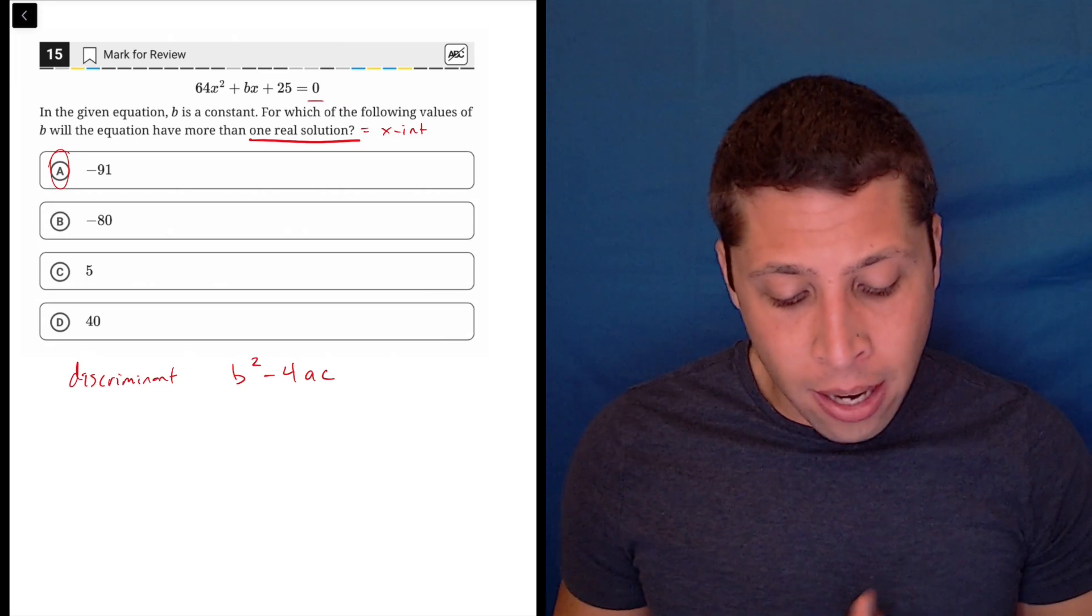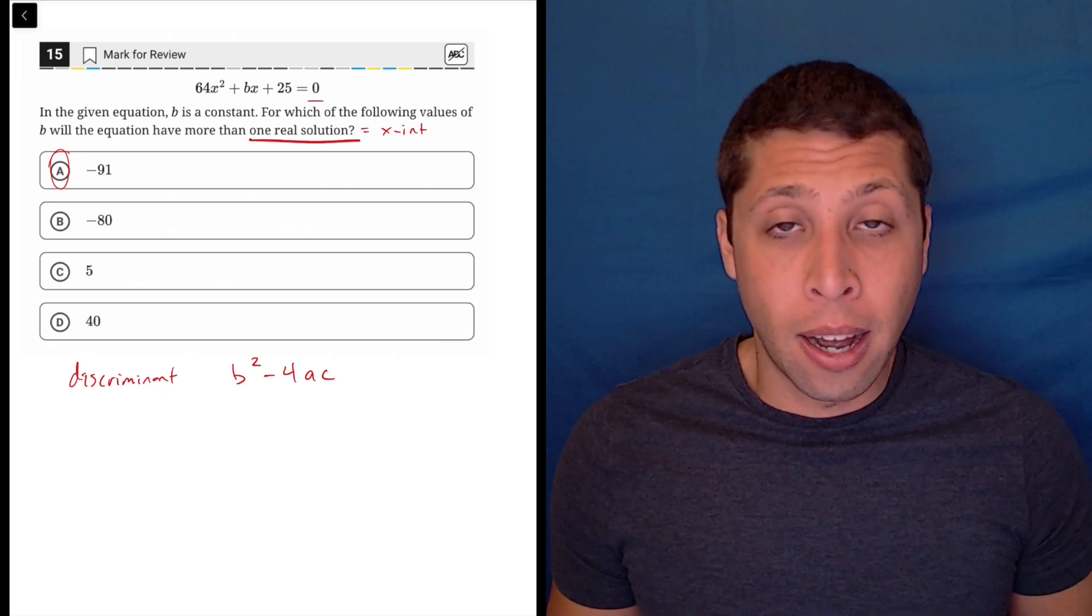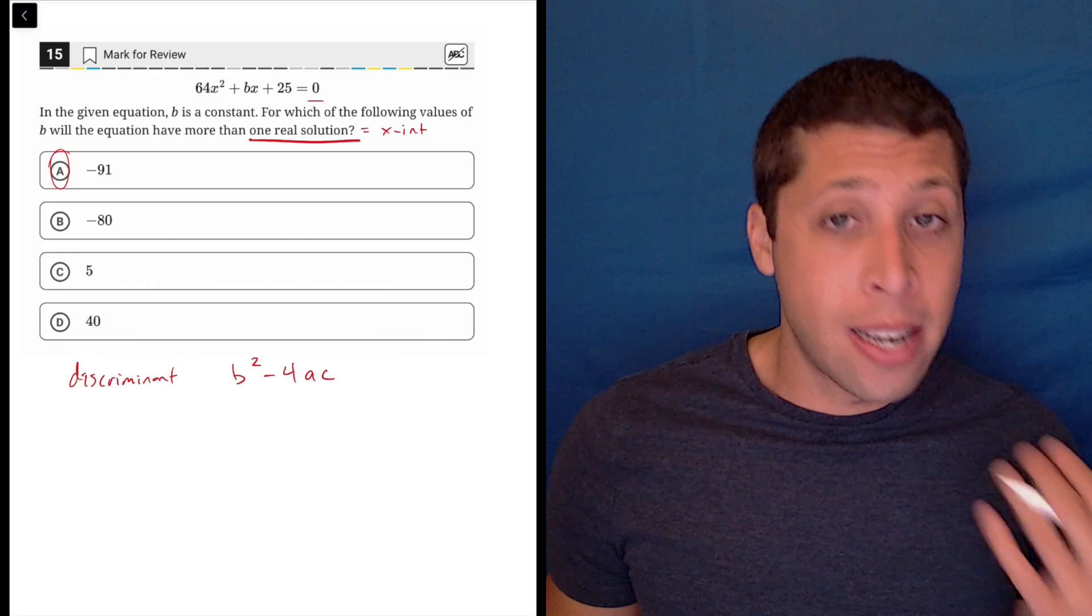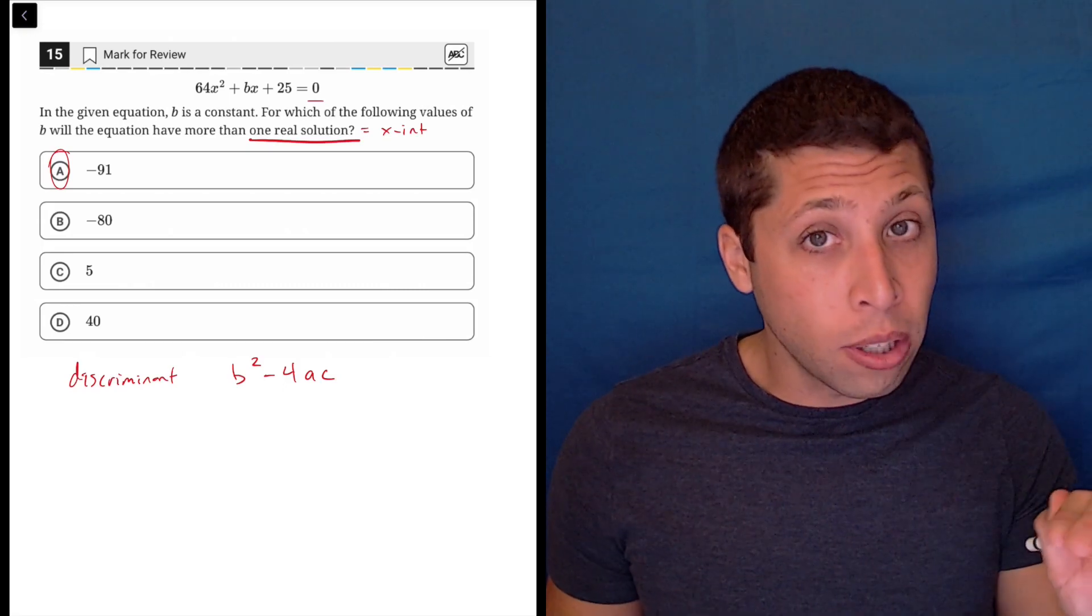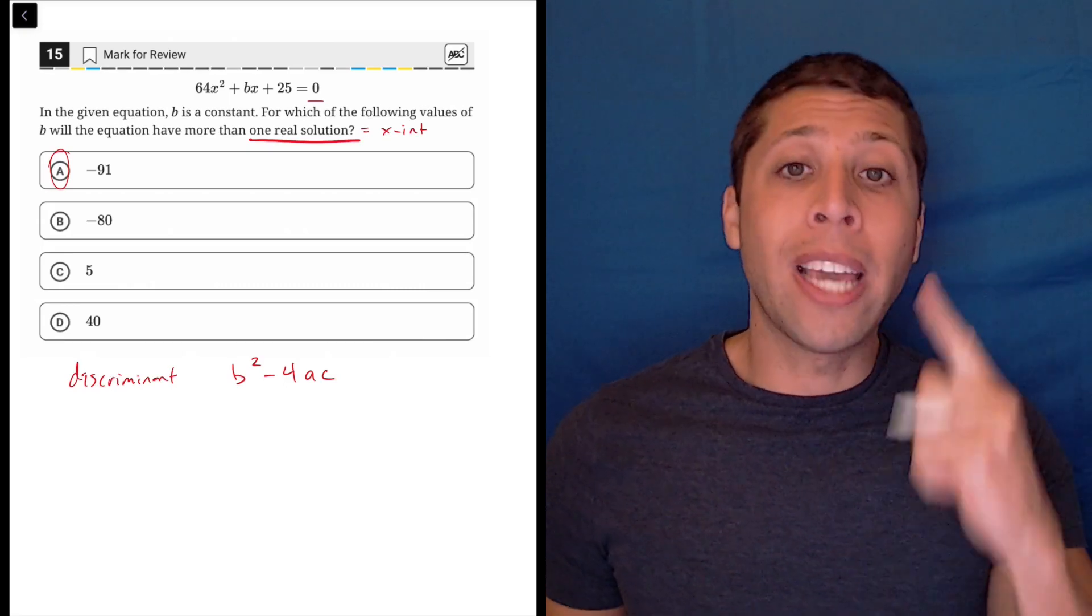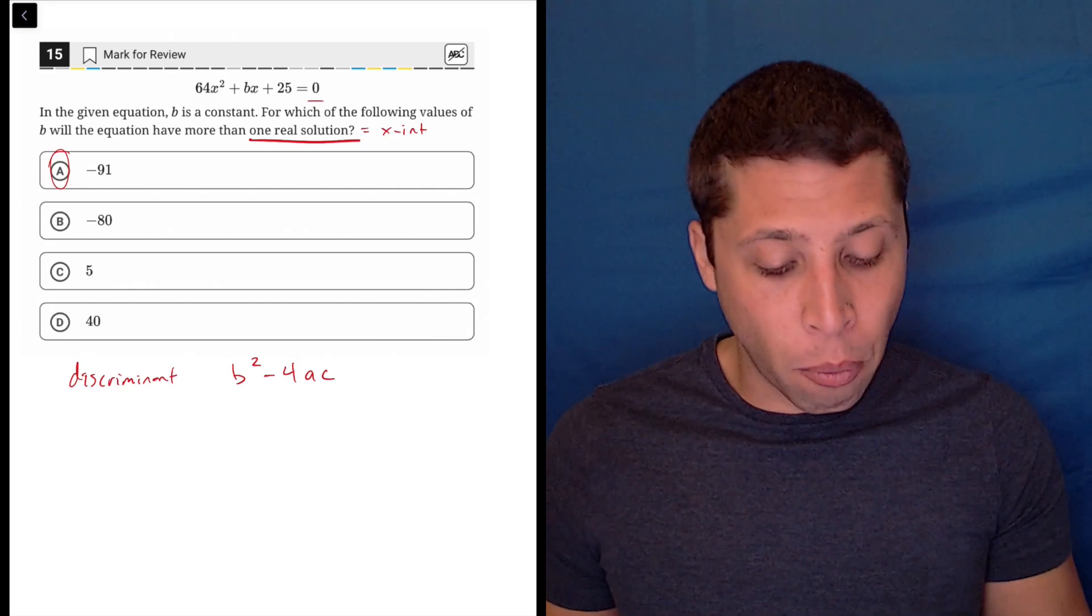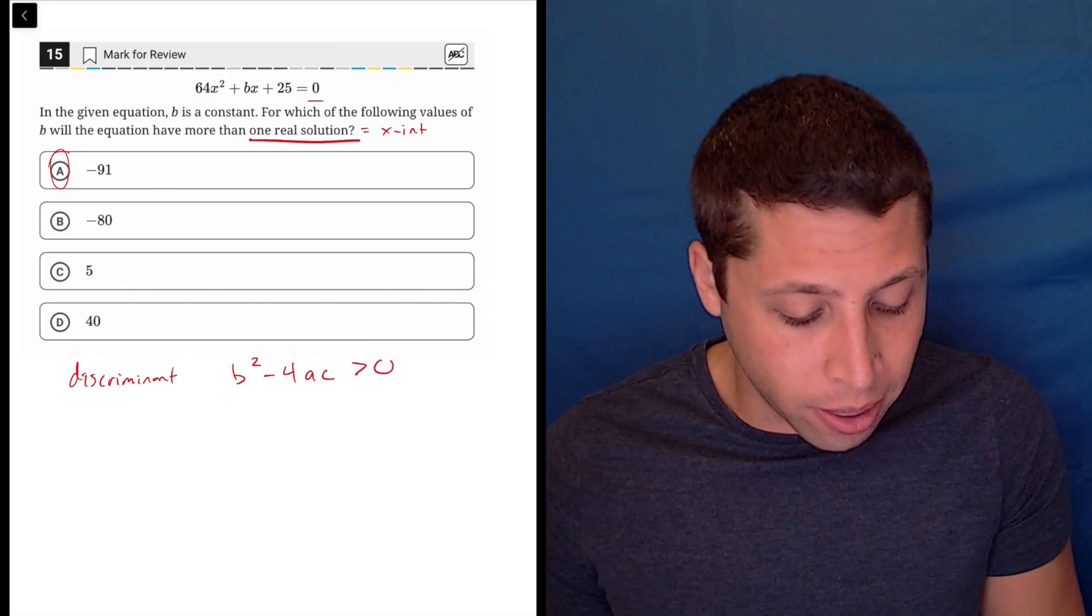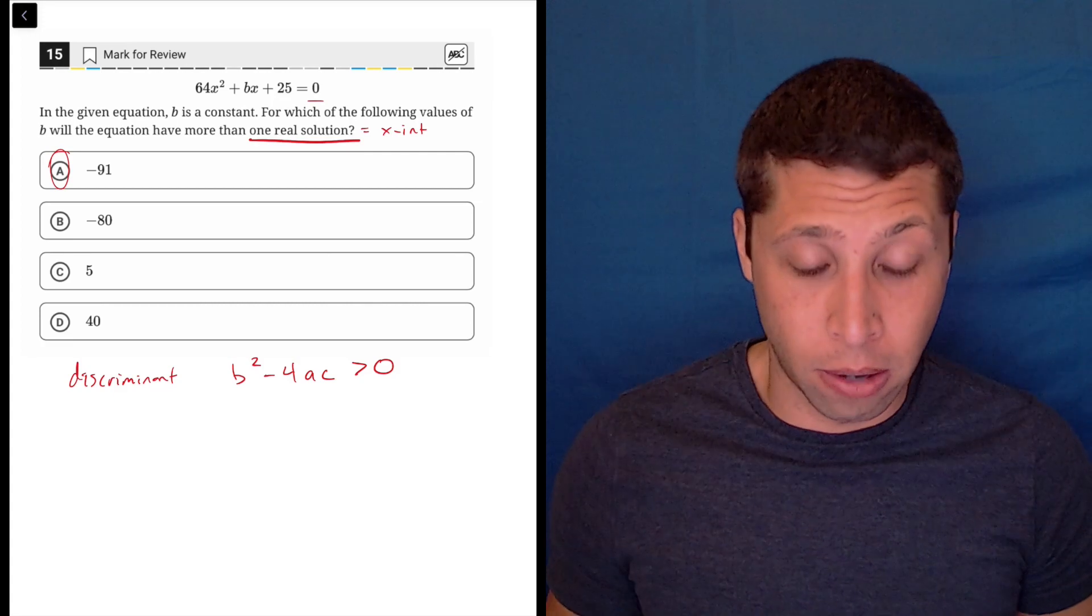And depending on what that value is, we know the number of solutions. So if that value is less than 0, if it's a negative number, we have no solutions. If it is equal to 0, we have exactly one solution. But what we want is more than one solution. So we want this value to be greater than 0.